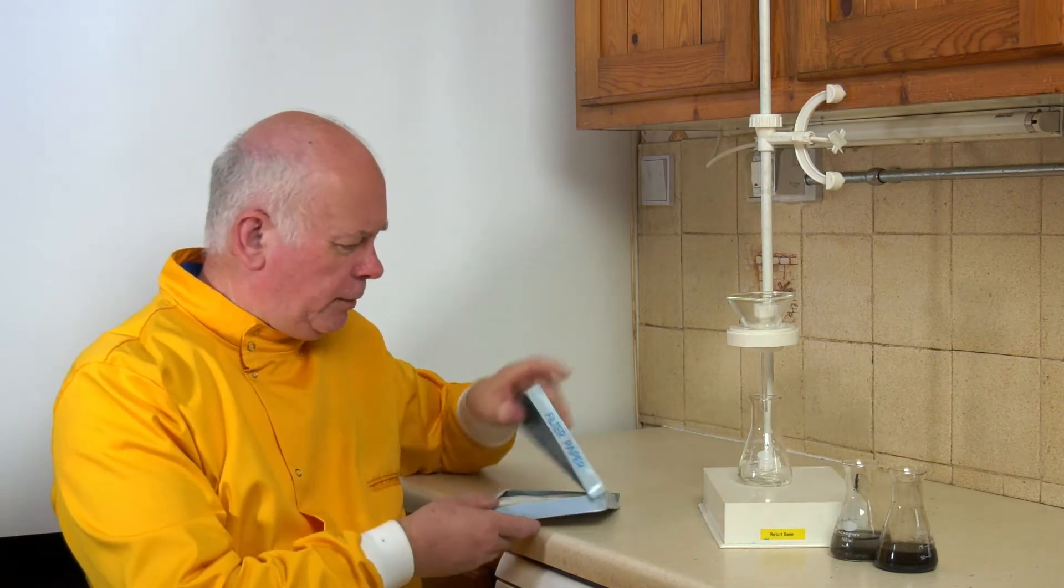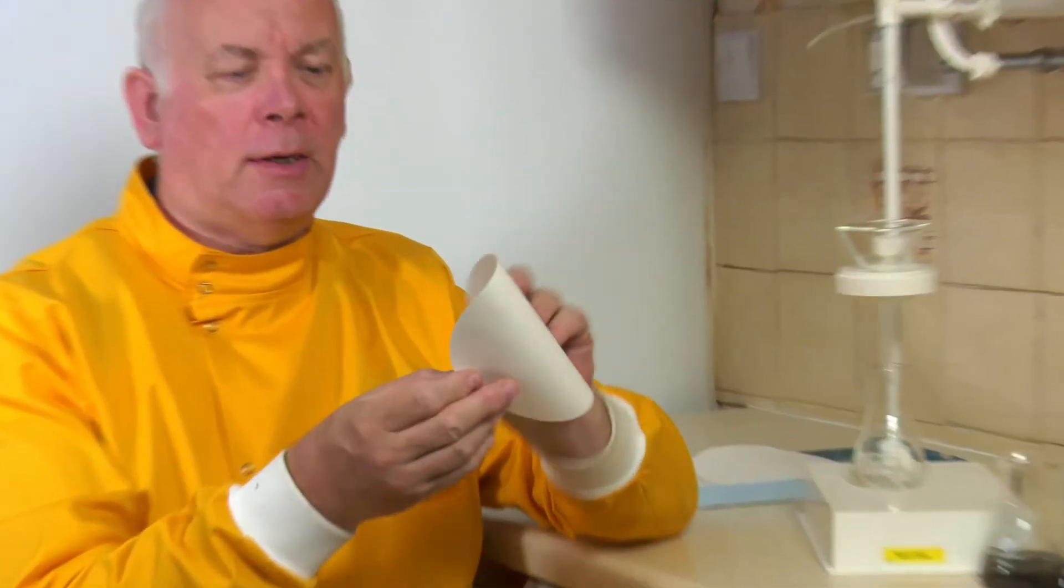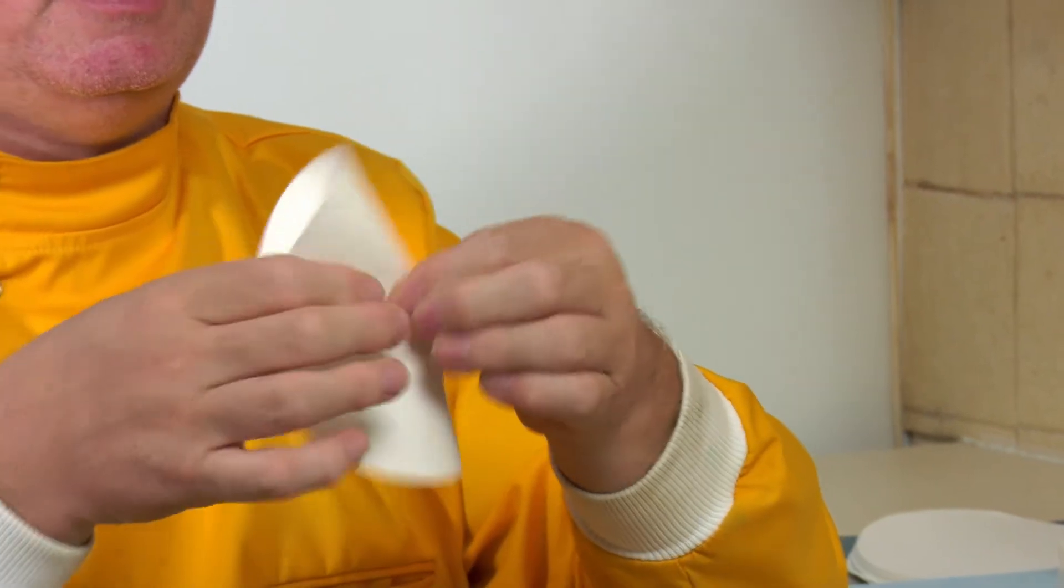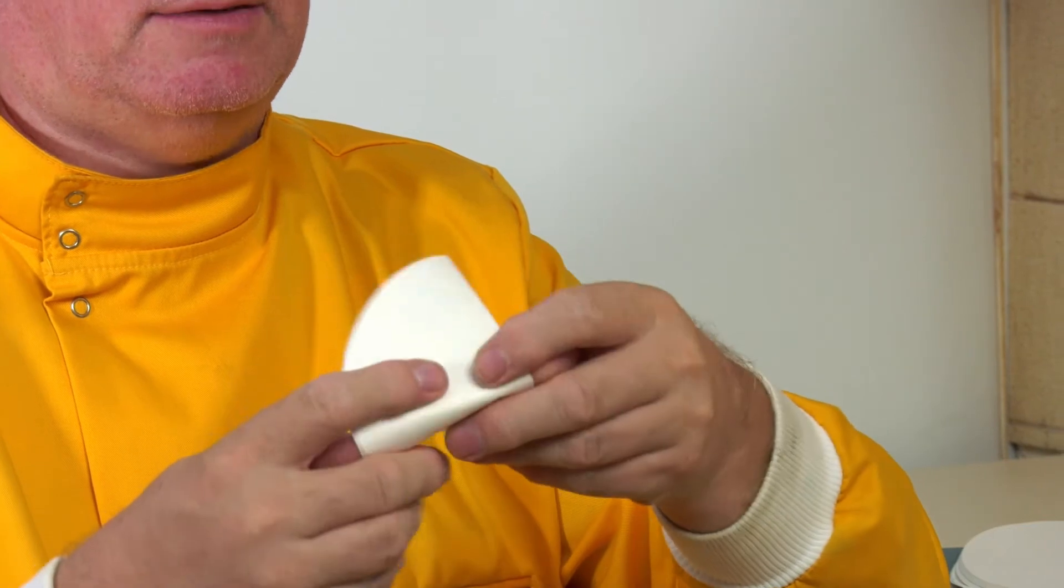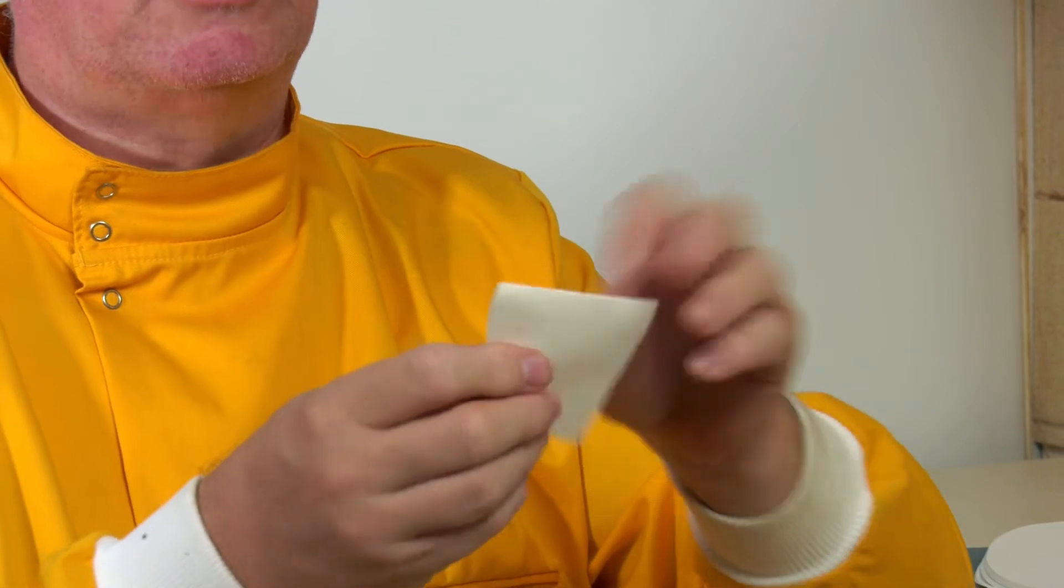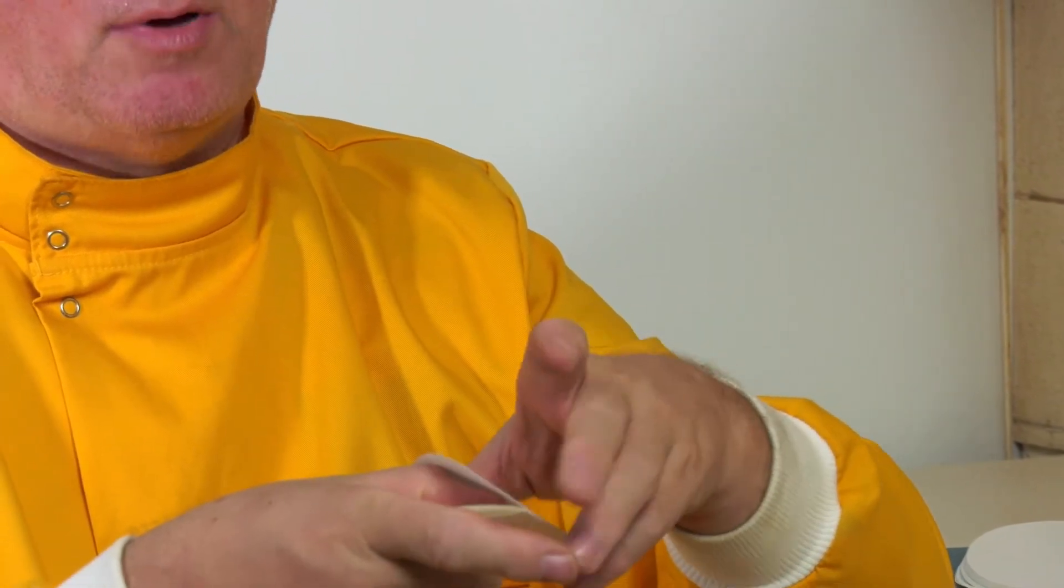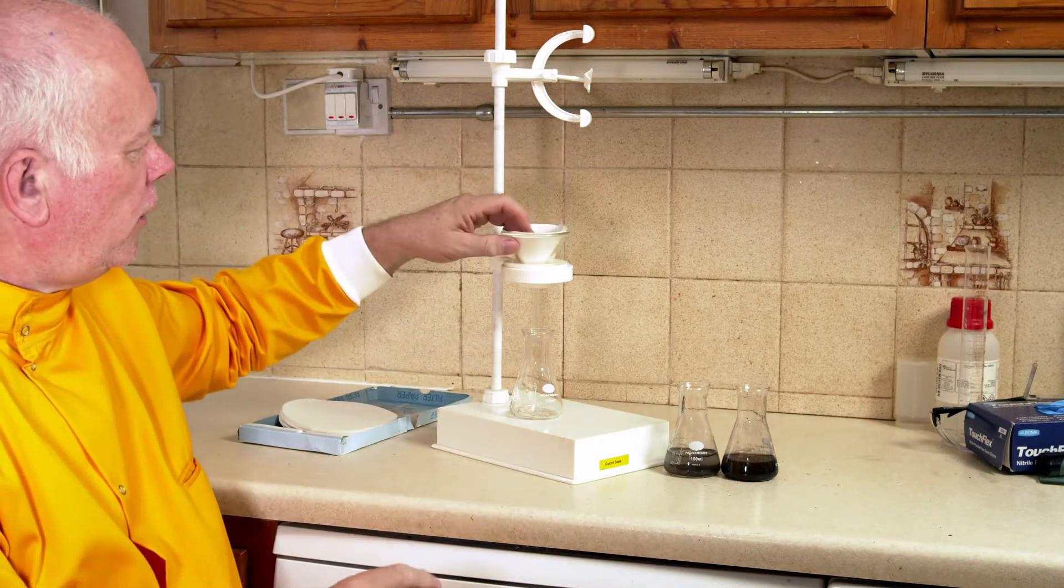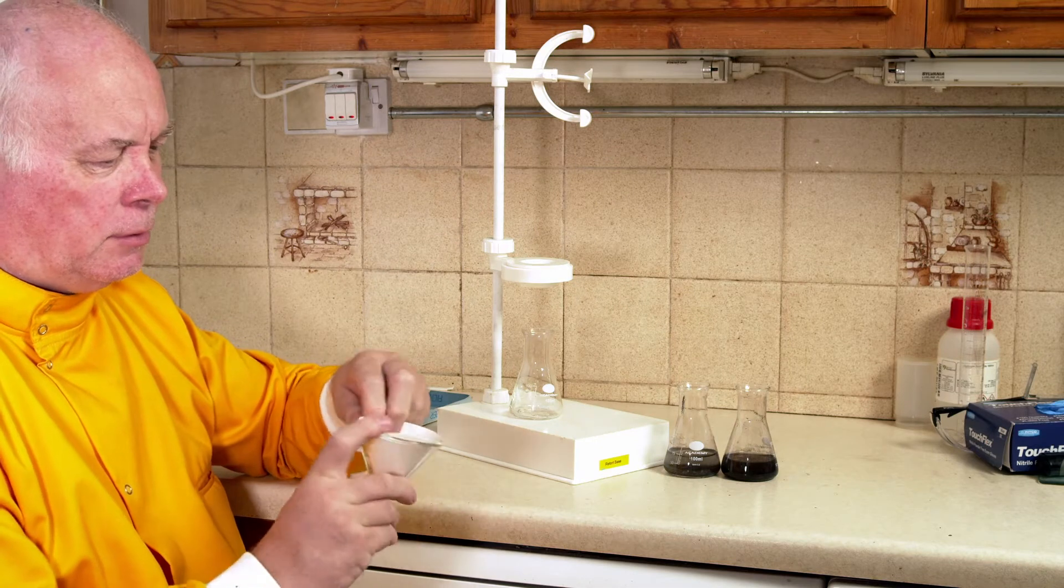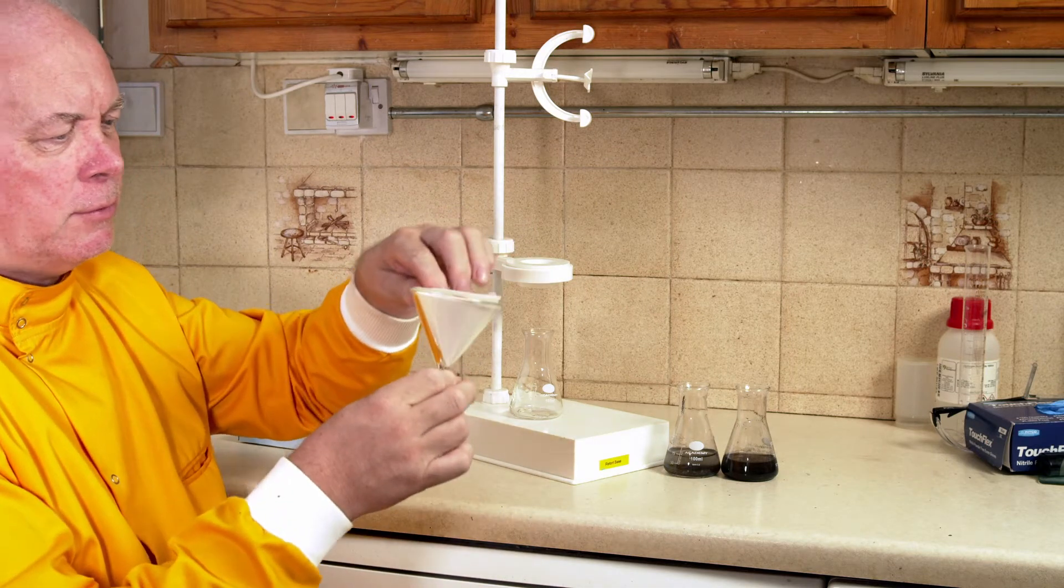And what we need is some filter paper. Now this filter paper can be folded in one of two ways. There's a very quick easy way of trying to do that and that is to fold the filter paper in half and then in half again and that gives you your typical quarter and then if we just open up one of those quarters it makes a cone and that cone fits neatly inside this filter funnel.